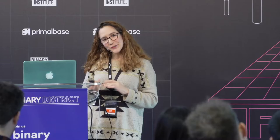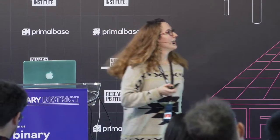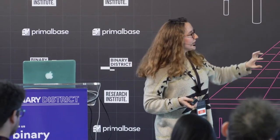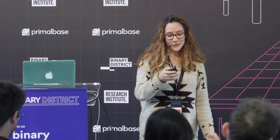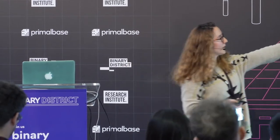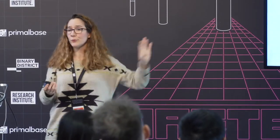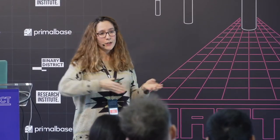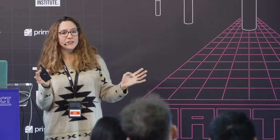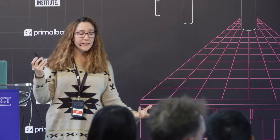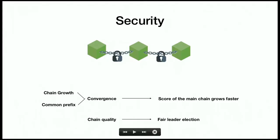Regarding the blockchain security properties — chain growth and common prefix — I combine these into one property I call convergence. The reason we have this is that the score of the main chain grows faster, so even if an adversary creates an alternate chain, its score will be smaller. Chain quality and fairness are achieved through the fair leader election.